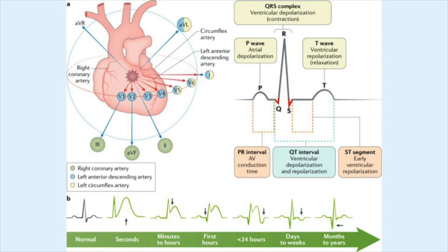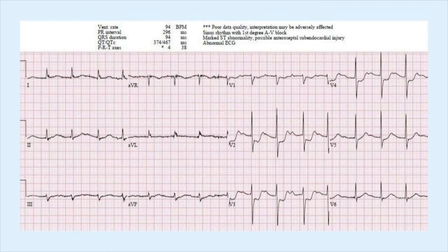We should look at what an EKG looks like for a posterior MI with regular lead placement. If you have depression in V1 through V4, you've likely got a posterior MI. This EKG shows regular placement of all the leads, and you can appreciate there's depression in V1 through V4. That should make you think that the back part of the heart is involved. So then we're going to do a posterior EKG.